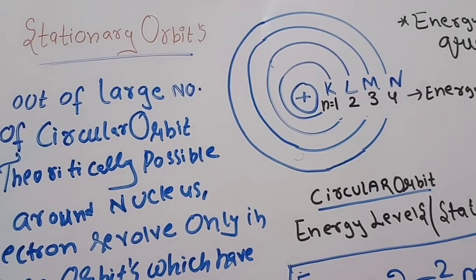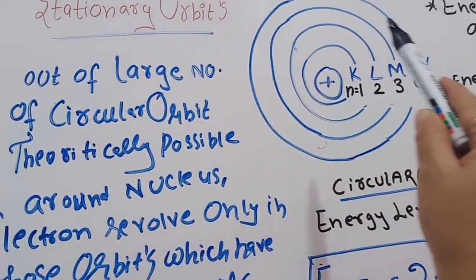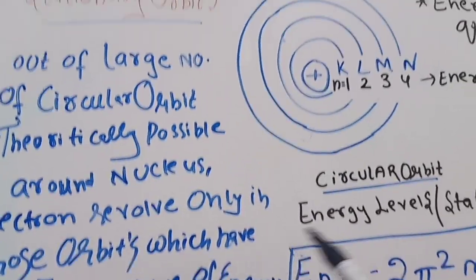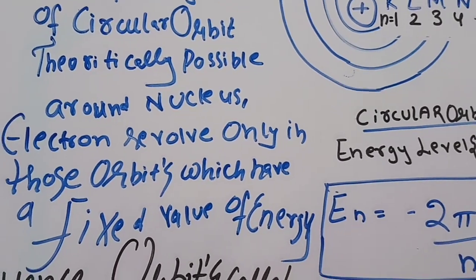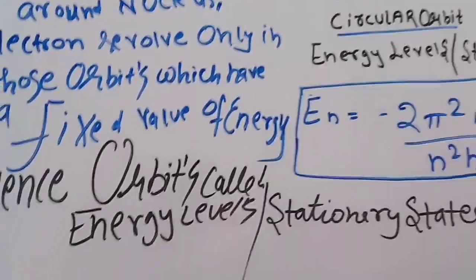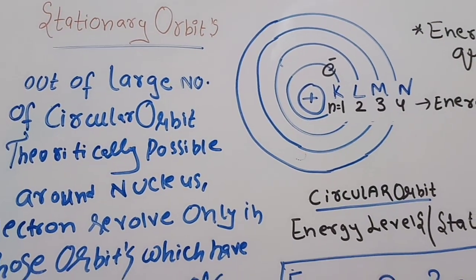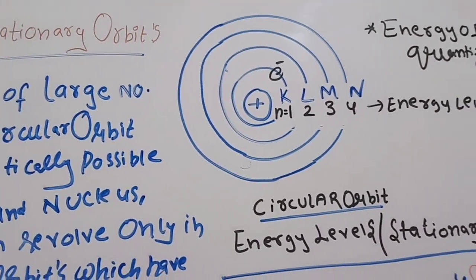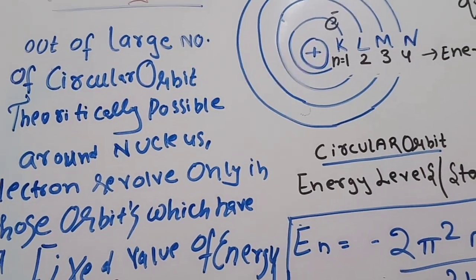If the question asks to define stationary orbits: there are many circular orbits theoretically possible around the nucleus, but electrons revolve only in those orbits which have fixed values of energy. The electron does not wander anywhere; it moves only in those orbits where the energy value is fixed. These orbits are termed energy levels or stationary states. Stationary orbits are those orbits which have a fixed value of energy, and electrons revolve only in stationary orbits — this does not mean the electron is stationary; it revolves in orbits whose energy is fixed.